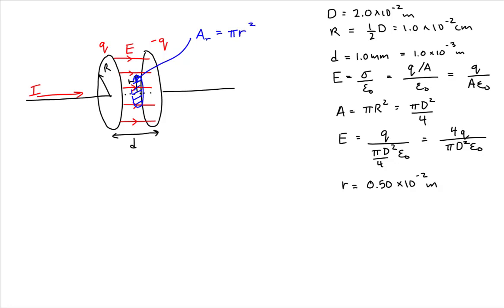Now, why we are finding the area of that Amperian loop, it's because we have a change of magnetic flux and we want to find the magnetic field at a point on that loop. And so using the Ampere-Maxwell law...